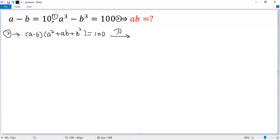Now, by condition 1, a minus b equals 10, so we get 10 times a squared plus ab plus b squared equals 100. Both sides divided by 10, so we get a squared plus ab plus b squared equals 10.